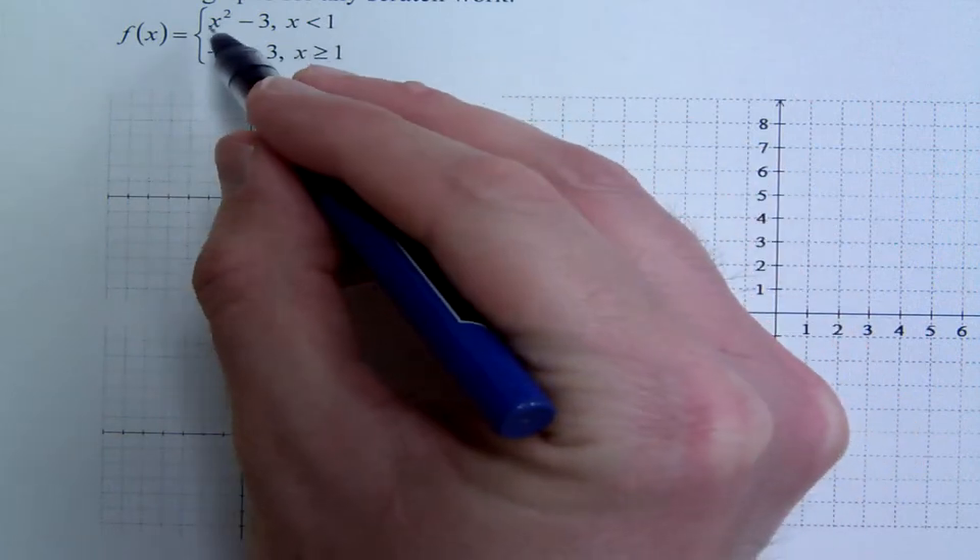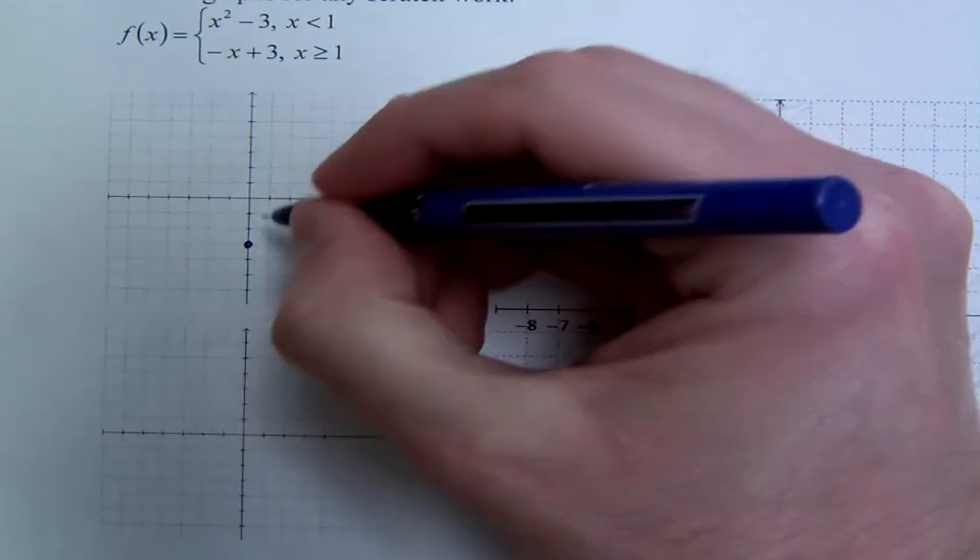Now in this homework, we have a couple of extra graphs over here to sketch out these guys. For example, if I see x squared minus 3, I know this is a parabola with a vertex at 0, negative 3,